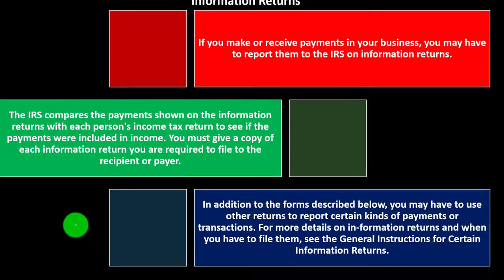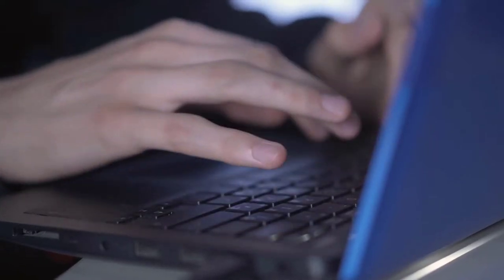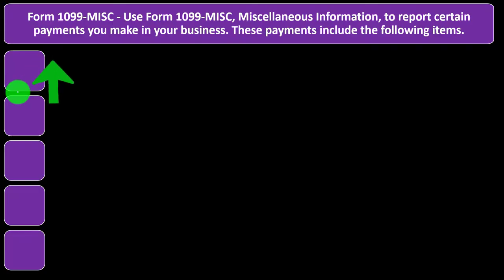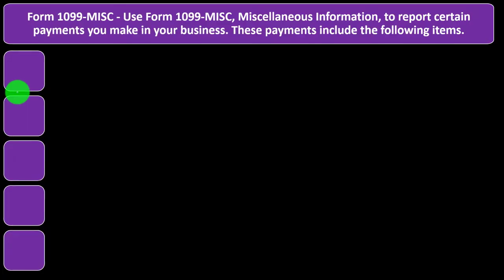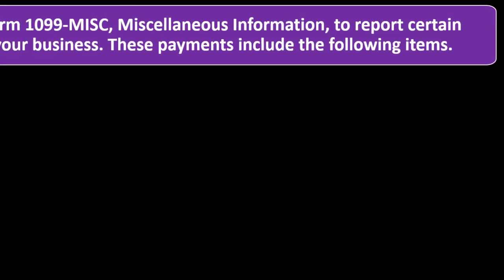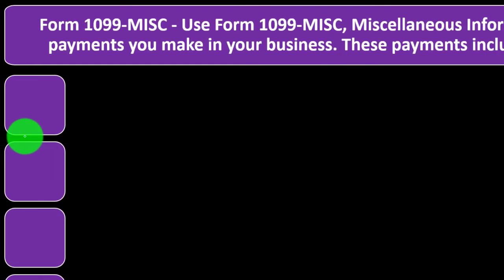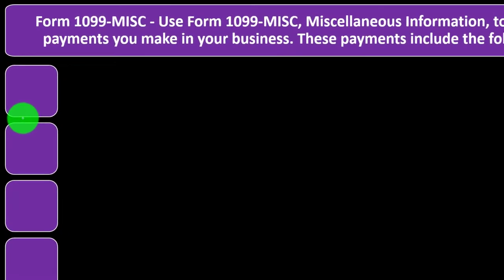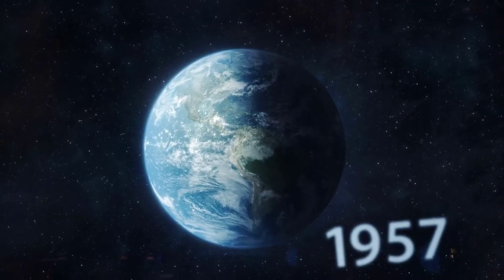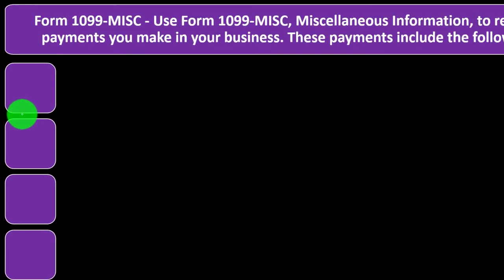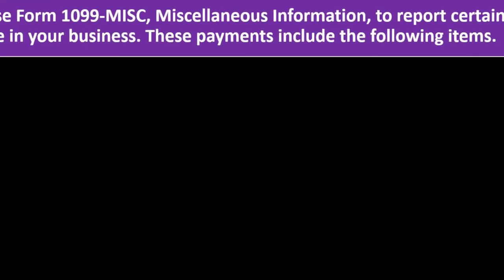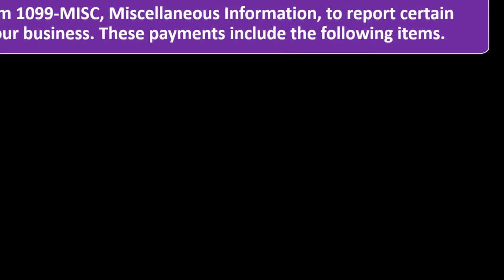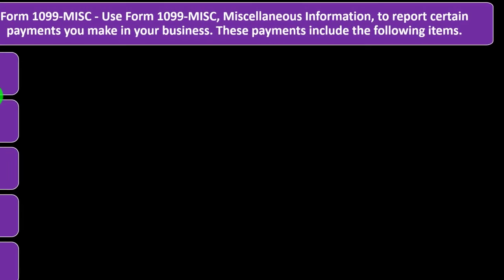In addition to the forms described below, you may have to use other returns to report certain kinds of payments or transactions. For more details on information returns and when you have to file them, see the general instructions for certain information returns on the IRS website. So we have the Form 1099 Miscellaneous — the famous Form 1099 Misc. This form is used to report certain payments you make in your business. A couple of years ago this form was used more often, but now they broke out the non-employee contractor work into another form, so the Miscellaneous form covers all the other stuff.